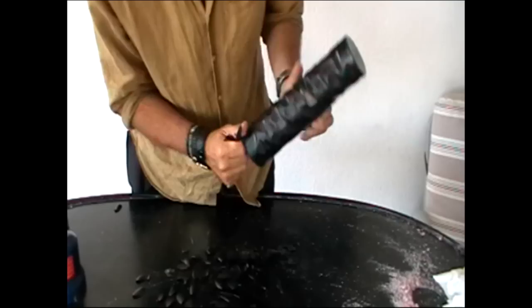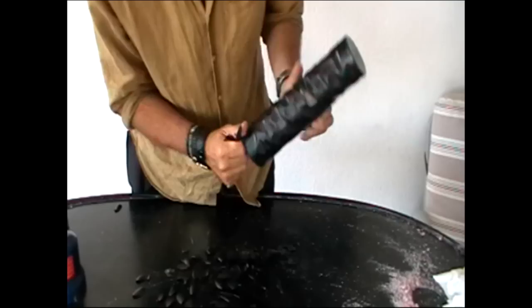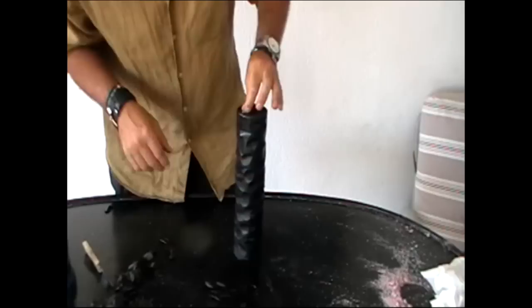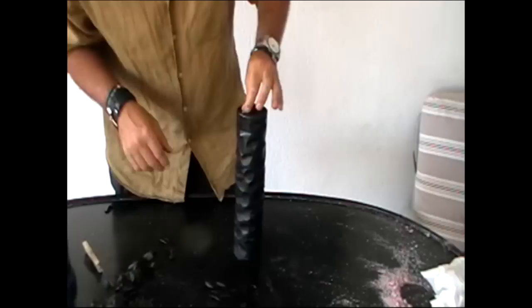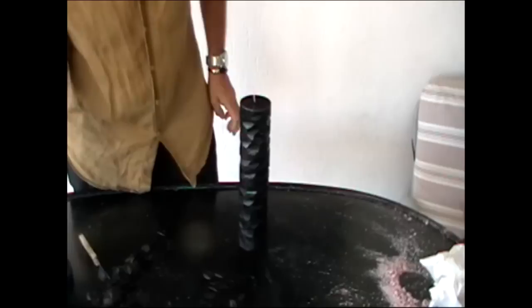Now once the candle has been completely hand carved, the object now is to take away any of these markings that the knife has made. Again I will take my blow torch and working from the top coming all the way down to the bottom I will remove any of the marks.